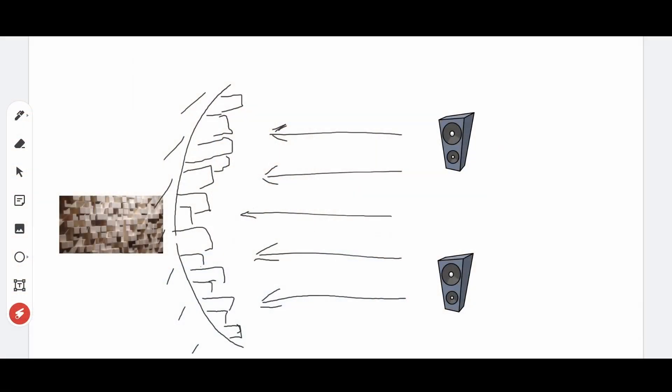There are also diffusers called quadratic residue diffusers and skyline diffusers. These diffuse sound. Their shape, which although looks random, helps in creating a surface that interacts with incoming sound waves, which are scattered back in all directions.